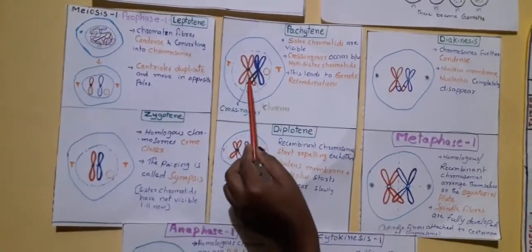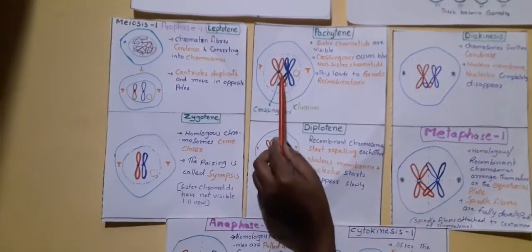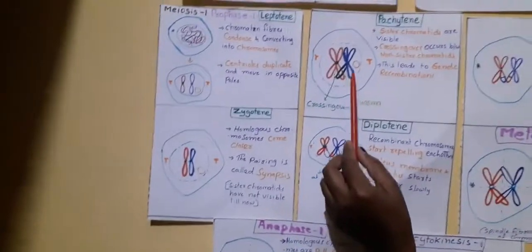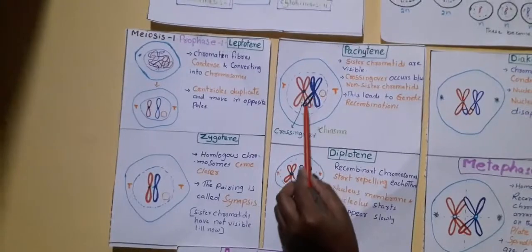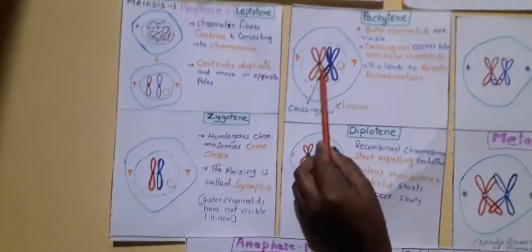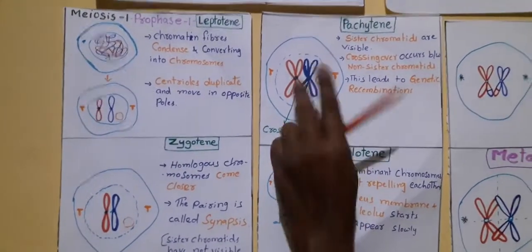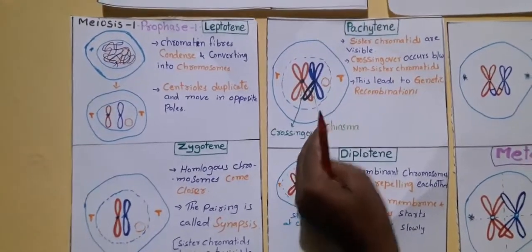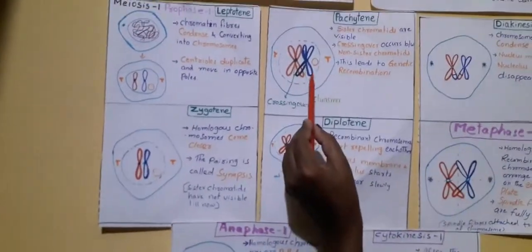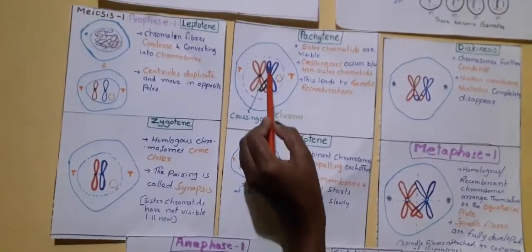During the process of crossing over, genes inside the chromosomes exchange with each other. The red colored chromosome genes transfer to the blue colored chromosome and the blue colored chromosome genes transfer to the red colored one — exchanging of genetic information takes place during crossing over between non-sister chromatids. That is the reason we get some characters from the mother and some from the father. Crossing over leads to genetic recombination.